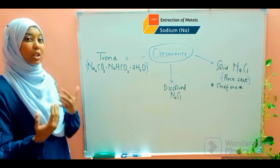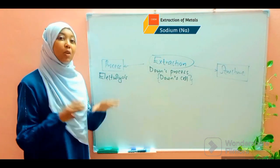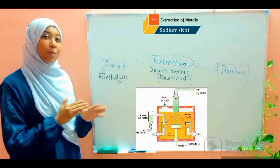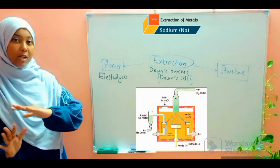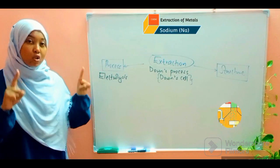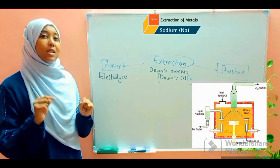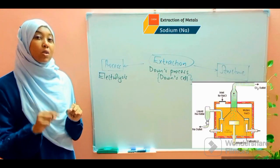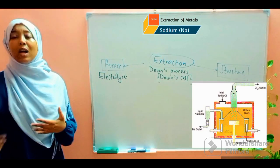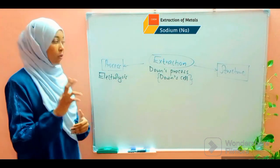Let's move on to extraction. Sodium metal is extracted from rock salt through a process known as the Downs process, which occurs within a cell known as the Downs cell. For this part of the lesson, I'll divide it into two parts: first, the process that occurs within the Downs cell, and second, the actual structure of the Downs cell. The structure is important because many exam questions focus on it — why each part is present and what its function is.